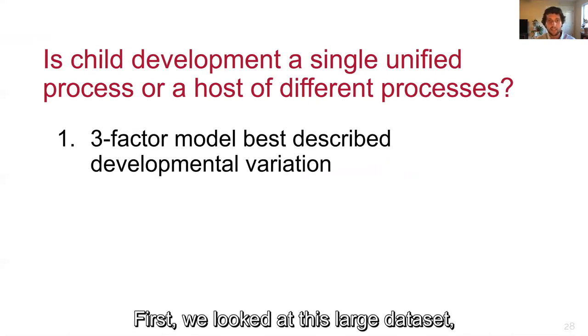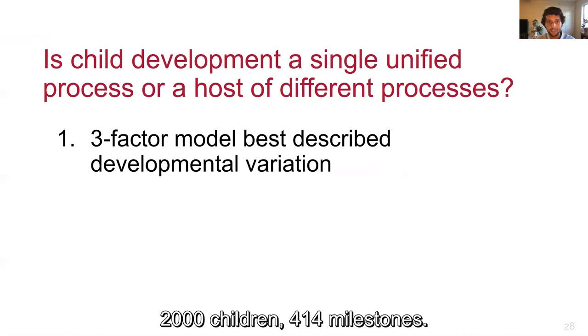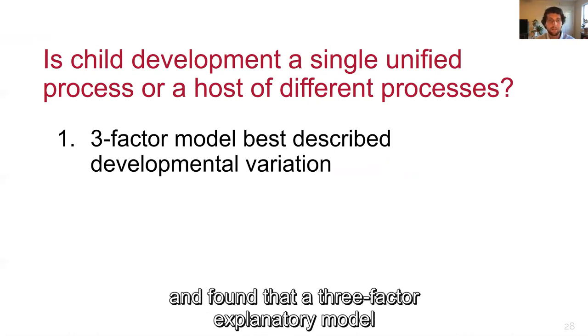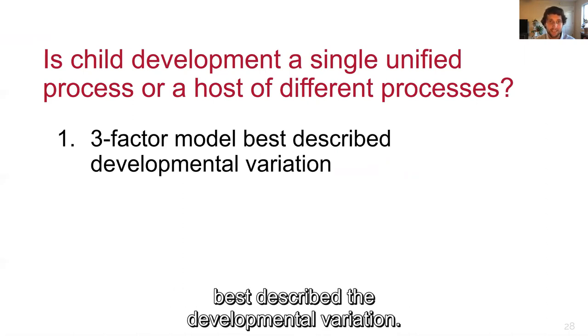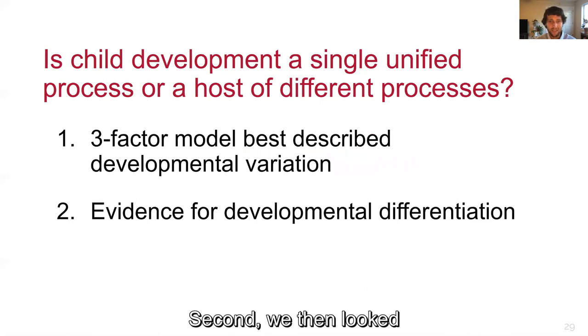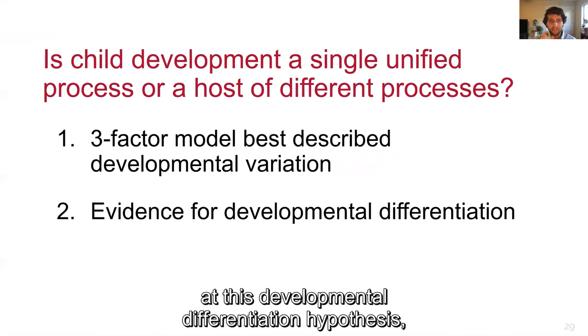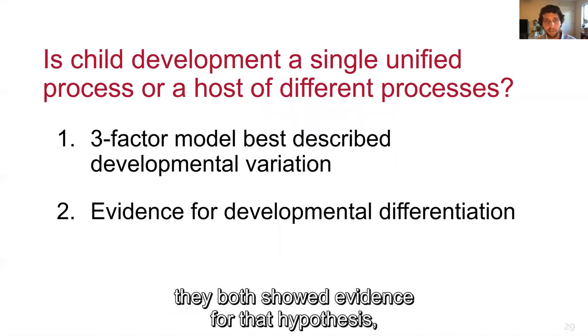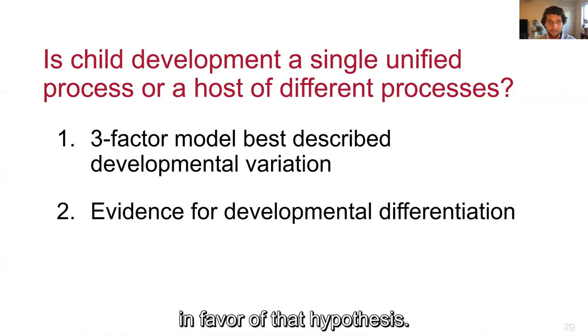First, we looked at this large dataset, 2,000 children, 414 milestones. We compared a wide variety of item response models and found that a three-factor exploratory model best described the developmental variation. Second, we then looked at this developmental differentiation hypothesis, and using two different approaches, they both showed evidence in favor of that hypothesis.